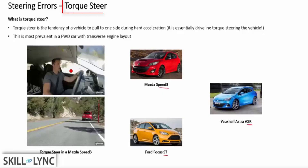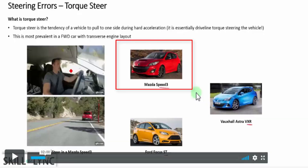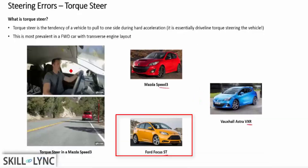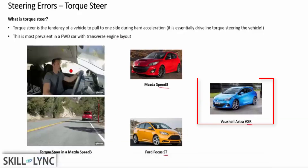Hey guys, hope you're all doing good and welcome to a new video. Today we are going to learn a fun little concept called torque steer. This is very common in cars that have front wheel drive. As an example, we have three little hatchbacks: the Mazda Speed 3, the Ford Focus ST, and Vauxhall VXR.